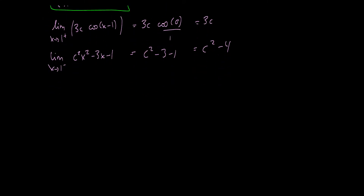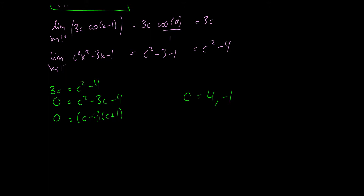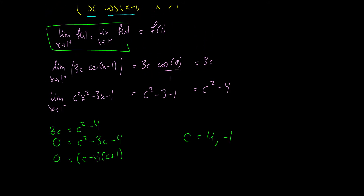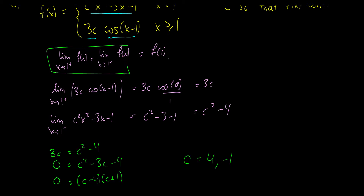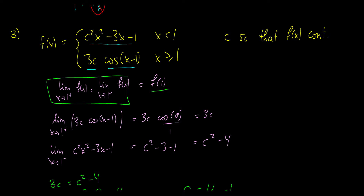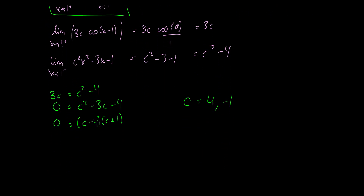We know these two things have to be equal, so we need 3c to equal c² − 4. We bring 3c over to the other side and do some simple factoring to get (c − 4)(c + 1). Therefore our values of c are four and negative one. When we plug in either four or negative one as c, the limits will be equal to each other, and f(1) will match as well. This is a great exam question because it combines knowledge of continuity with pre-calculus algebra skills.